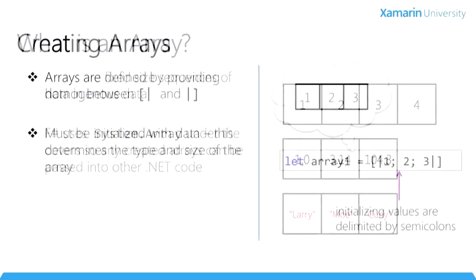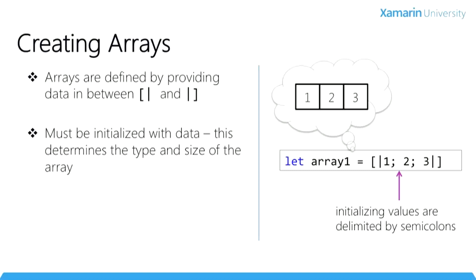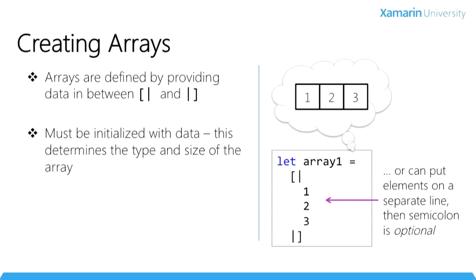There's a built-in syntax for creating arrays in F-Sharp. We use the bracket-bar syntax, as you can see here. In order to make type inference work, you have to provide at least one item in the initializer. If you omit the data, F-Sharp will create an open generic array type, which isn't really useful. The items you want to initialize the array with must be delimited with semicolons — you can omit the final semicolon or include it. You can also create arrays by placing each item on a separate line, in which case semicolons are optional.